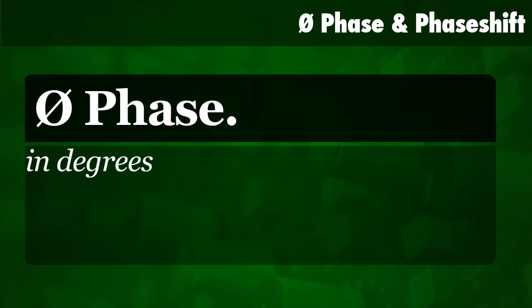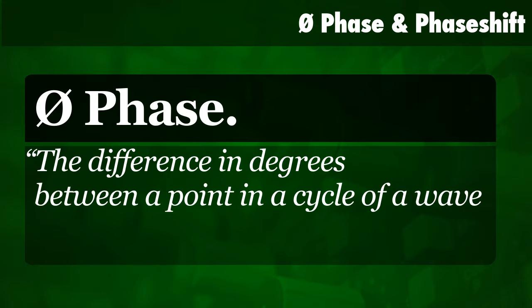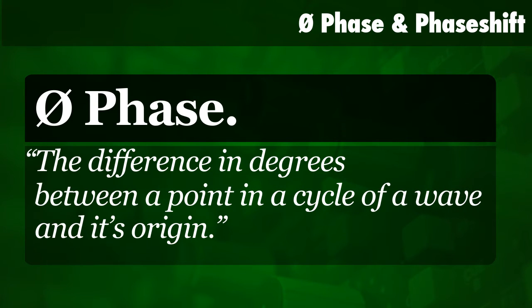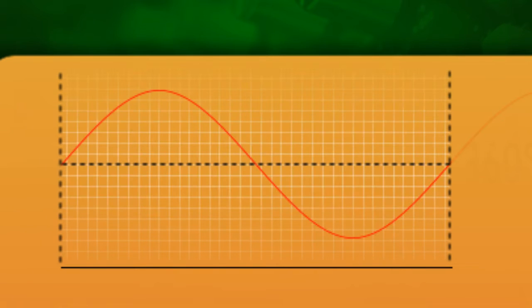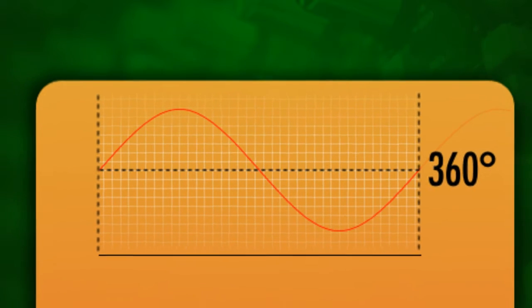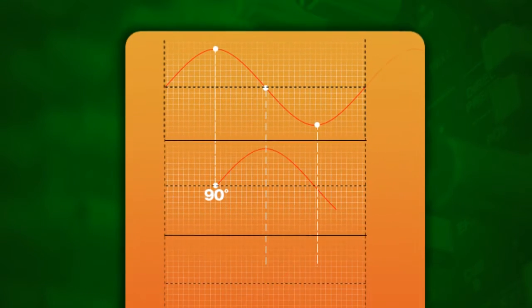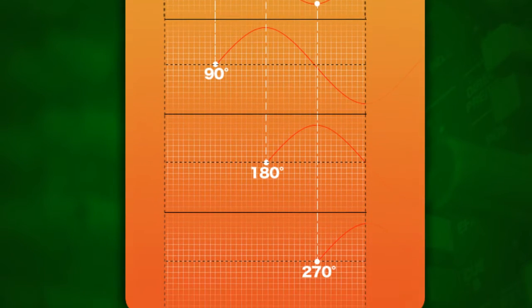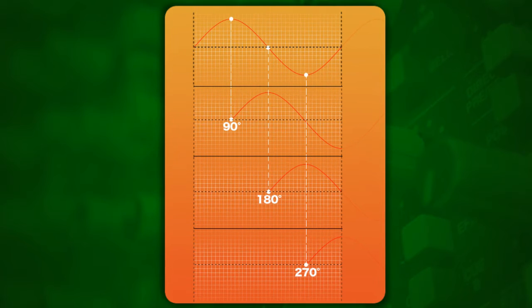Phase is the difference in degrees between the point in the cycle of a wave and its origin. We've seen that a completed cycle runs for 360 degrees, so 180 degrees would be the phase angle for half the cycle. Phase is actually a measurement of time expressed in degrees.